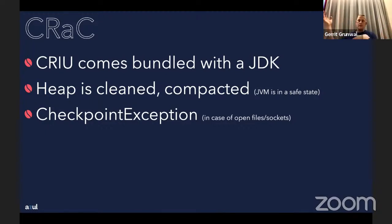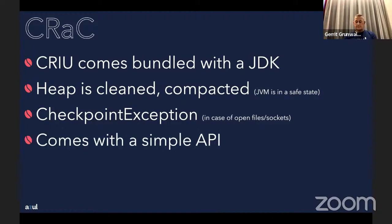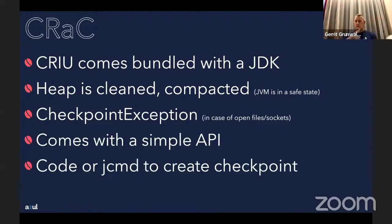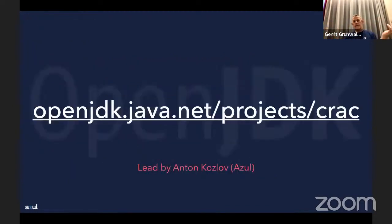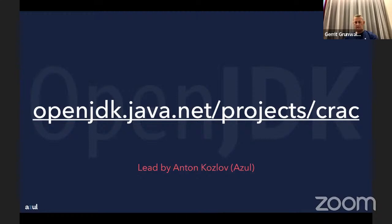CRaC comes with a simple API. You can either create a checkpoint by code or use jcmd — both are possible. You'll find the project at openjdk.java.net/projects/crac. It's led by one of Azul's engineers, Anton Kozlov, and became an official OpenJDK project at the end of last year. The hope is that it will make it into the official distribution of OpenJDK.